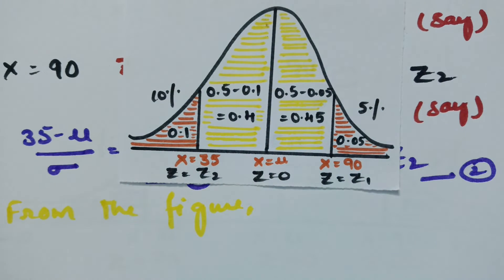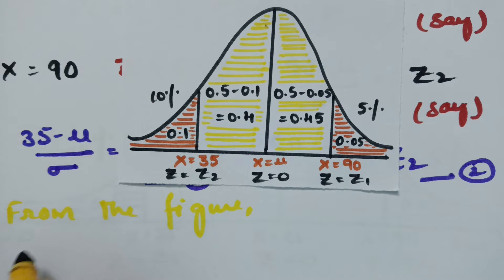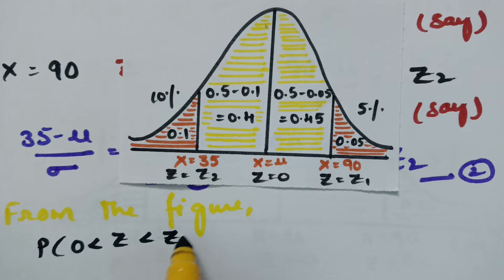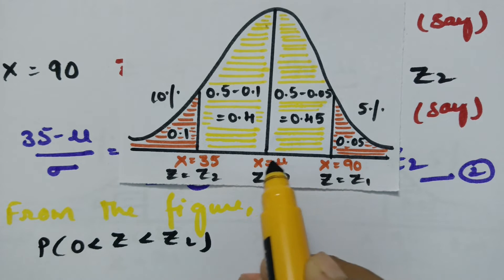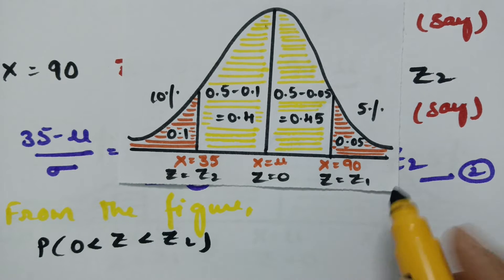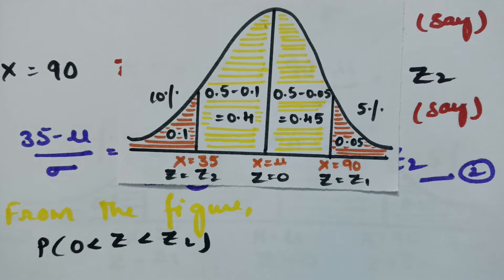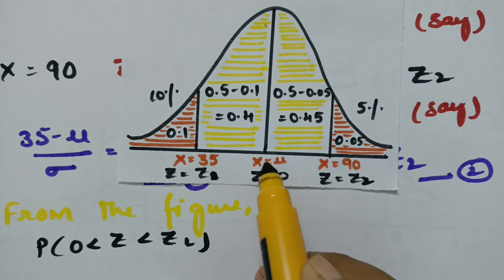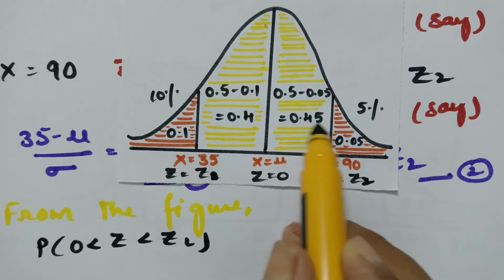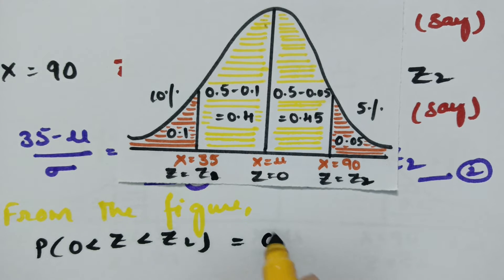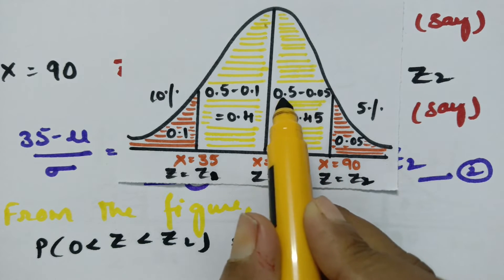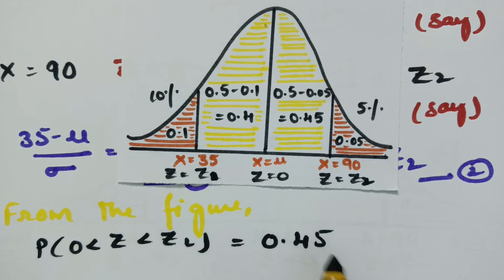From the figure, the probability of 0 less than z less than z2, that is the distance between z equals 0 and z equals z2, is 0.45. After subtracting from 0.5, we get 0.45. So what is the value of z2?